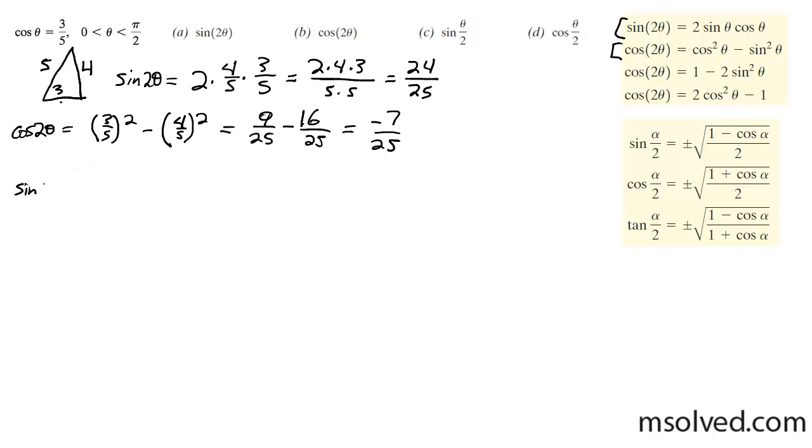Moving on to the half angle of the sine, using this right here, so I'm going to have plus or minus the square root of 1 minus the cosine, which is 3 over 5 in this case, divided by 2. It's going to be equal to plus or minus the square root of 5 over 5, common denominator is 3 over 5 over 2, plus or minus the square root of, subtract the 5 and the 3, and you get 2 over 5 over 2.